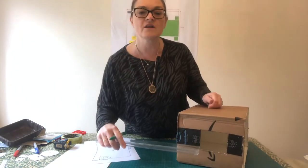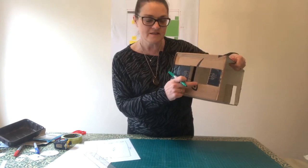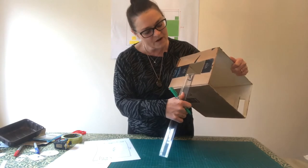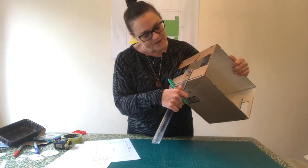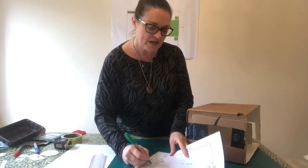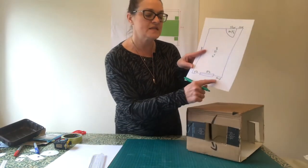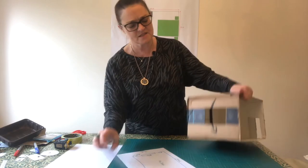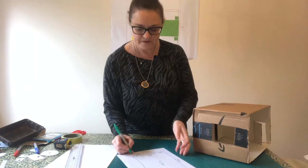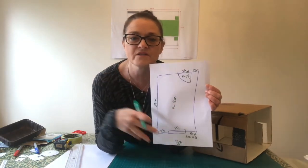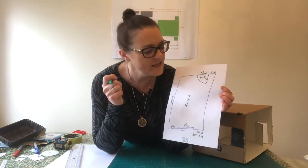We also need the height of the window. We measure from the bottom to the windowsill and then from the windowsill to the top of the window. The bottom gap is six centimetres, and the window itself is seven centimetres tall. I'll note H equals seven for the window height, and H2C — height to windowsill — equals six. These are all the measurements I need, and this working drawing keeps them all in one place.